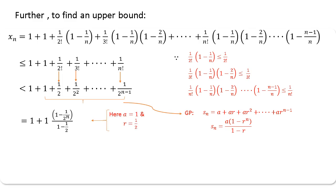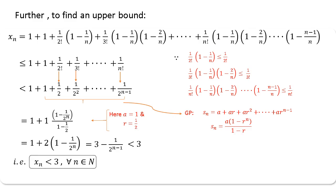After further simplification, you end up with the result: xn < 3 for all n ∈ ℕ. This means the sequence xn is bounded above by 3.